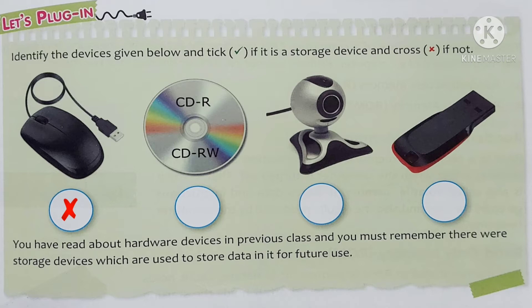Next is the picture of a CD. CD stands for Compact Disc. CD-R stands for Compact Disc Recordable. CD-RW stands for Compact Disc Rewritable. CD is a storage device.